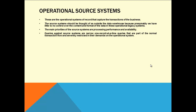Queries against a source system are narrow — one record at a time queries that are part of the normal transaction flow. An operational system is not for the business users, it is for the customers. The customer will not come and ask how many people came to your bank today or how many loans you have. He is more concerned about a single transaction — like 'I see $30 spent on such-and-such day, where did I buy this product?' So your source system must be capable of narrowing down to one record at a time.